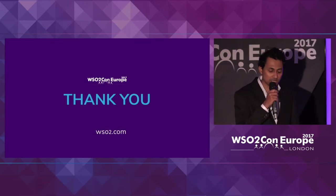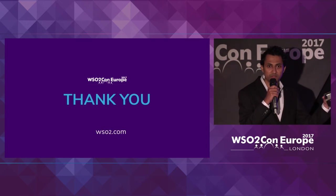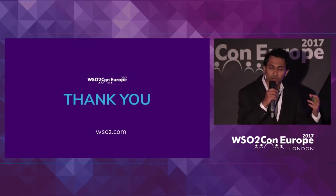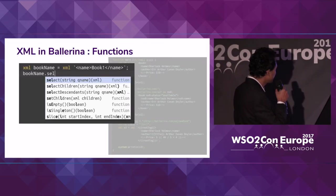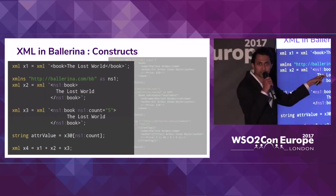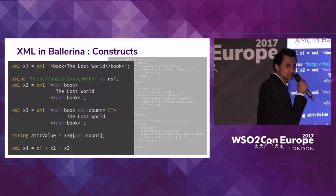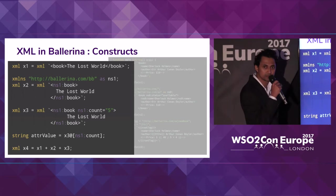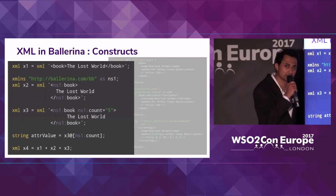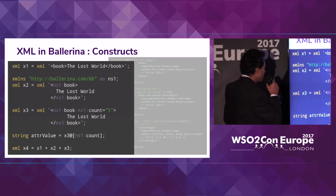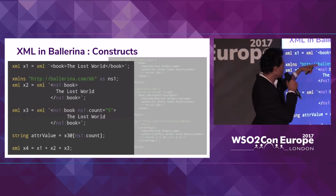You can define a default namespace. Let's say you have an XML element which does not have a namespace — in that case, the default namespace would be the package name of that program. You can also define your own default namespace. In my example here, I have defined a namespace with a prefix. If you don't have the prefix part, that would be your default namespace. So if you define an XML literal which doesn't have a namespace, it would automatically use your default namespace.